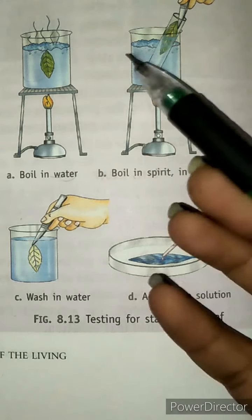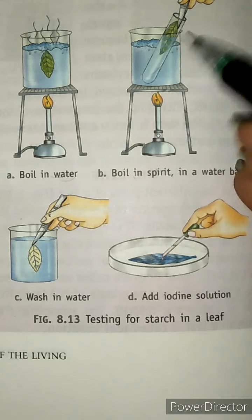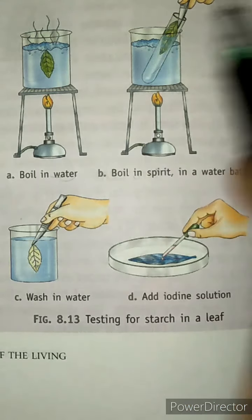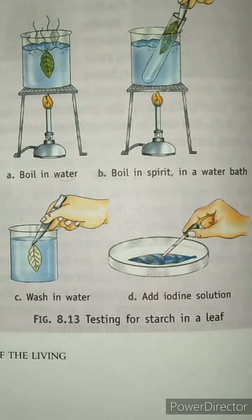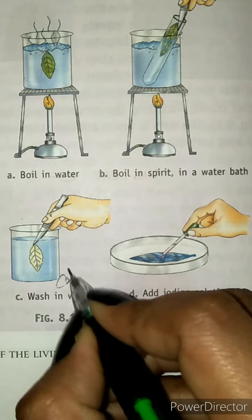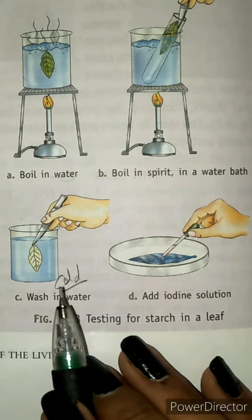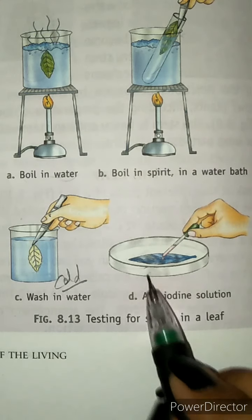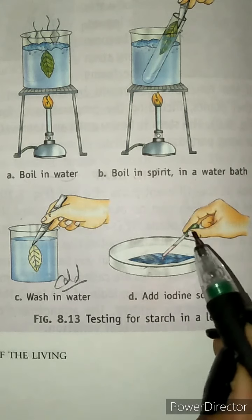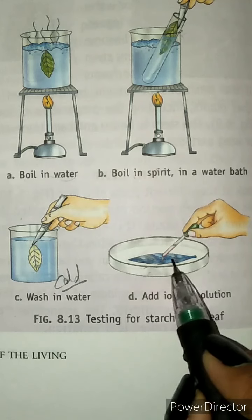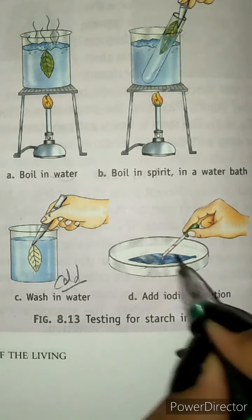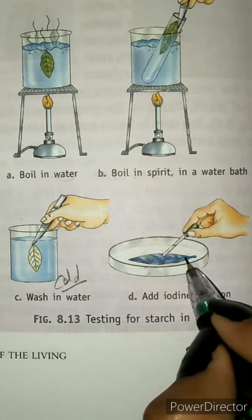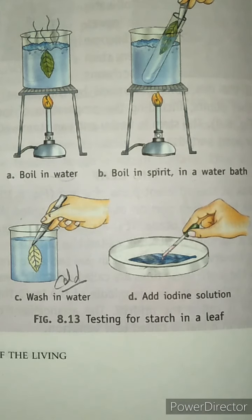After boiling in spirit, take the leaf out and wash it with cold water. Then place the leaf in a petri dish and add a few drops of iodine solution using a dropper. Wherever starch is present in the leaf, those areas will turn blue or black in color.